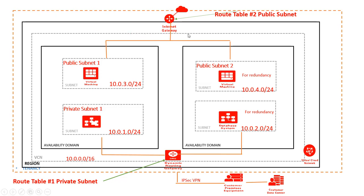That is very important. You can create and attach the dynamic routing gateway to the virtual cloud network, but the route still needs to be open. To do that, you need to go to the individual subnets and get those route tables updated — if they are using separate route tables and not the default route table for the VCN. I hope this helps you understand how it works.